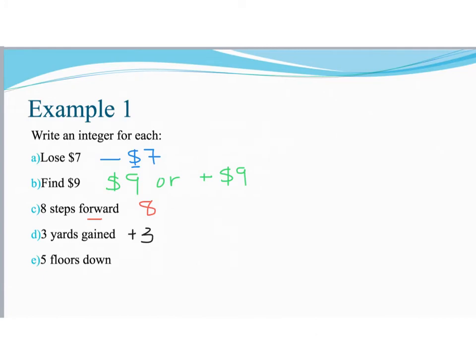And then if we are looking at part E, if we're talking about five floors down, that would be five floors below us, or we would represent that with a negative five.